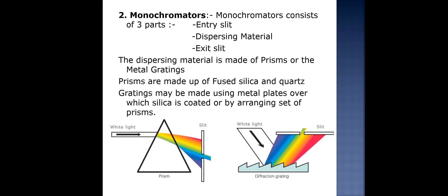The second instrument is the dispersing material, also known as the monochromator. The monochromator consists of three parts: the entrance slit, through which polychromatic light enters; the dispersing material, where the polychromatic light disperses into its single components; and the exit slit, from which the monochromatic light at the required wavelength exits and passes on to the sample. The dispersing material is made up of prisms or metal gratings. Prisms are made of fused silica and quartz — glass is not used because it absorbs UV radiation. Gratings may use metal plates coated with silica or an arrangement of prisms.